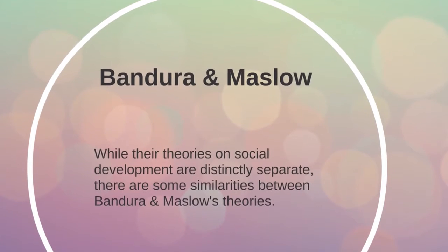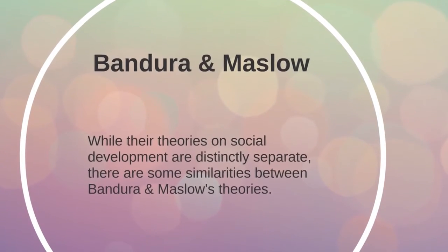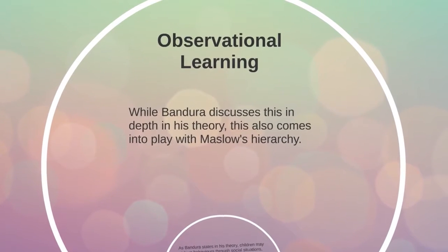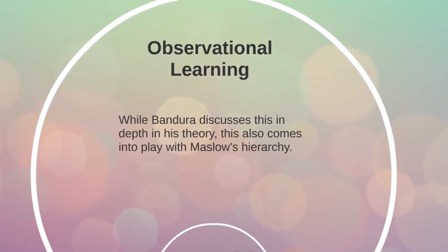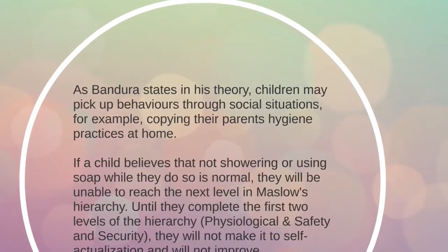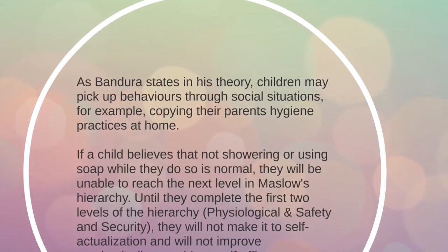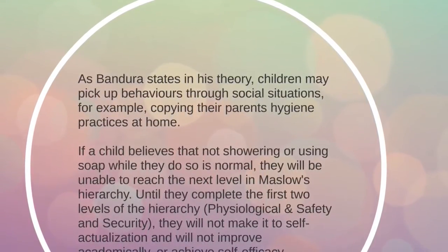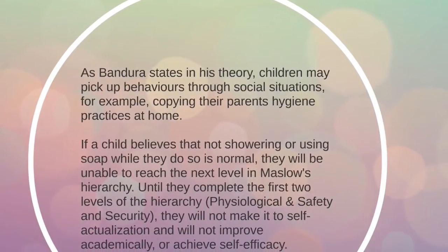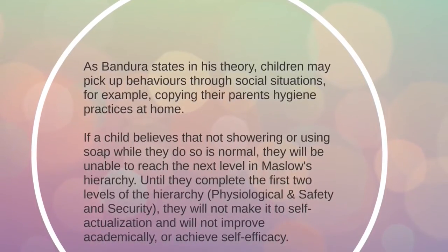Even though Bandura and Maslow's theories on social development are distinct, they contain some clear similarities. Observational learning is covered in depth in Bandura's theory, but is also involved in Maslow's hierarchy. Bandura states that children may pick up behaviors through social situations such as with their parents at home. Maslow believes that the first two levels of needs — physiological and safety and security — must be met before self-actualization and academic success may be achieved.